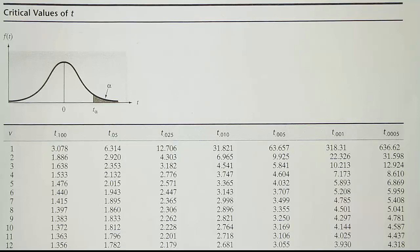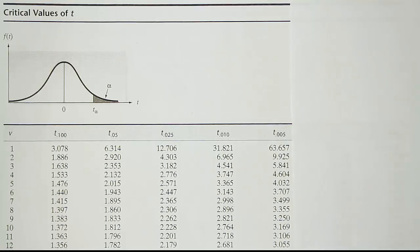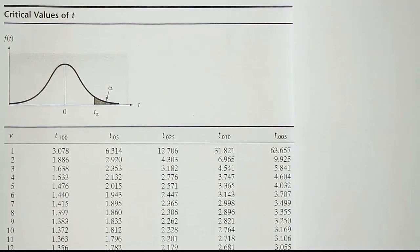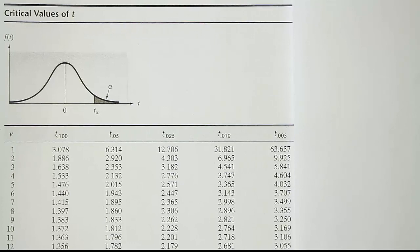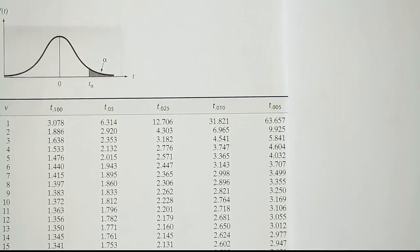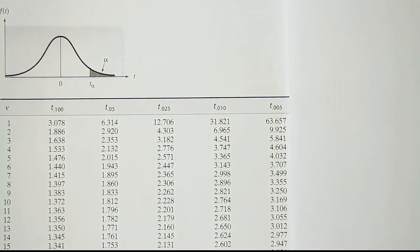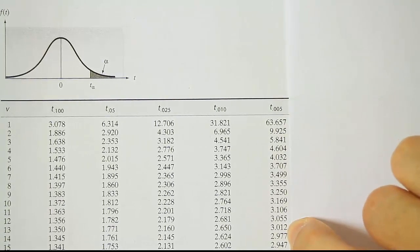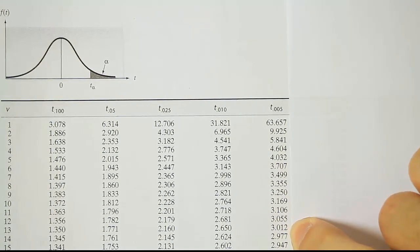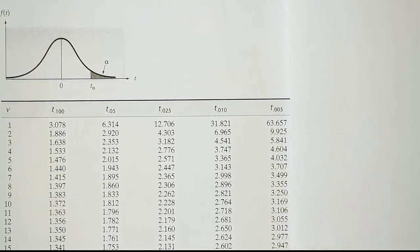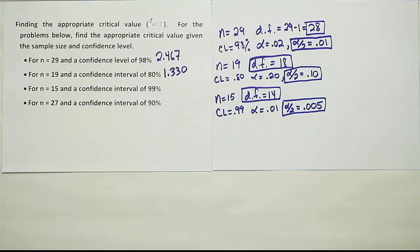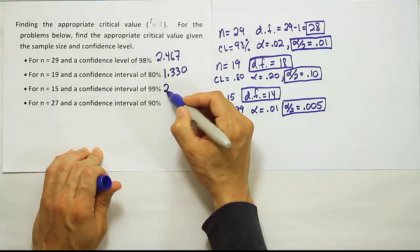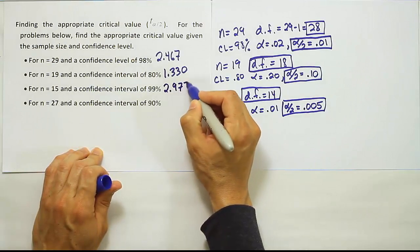We're looking up 0.005 and 14 degrees of freedom. The 0.005 column is shown here, and scrolling down to 14 degrees of freedom gives the next-to-last value on the right-hand side: 2.977.